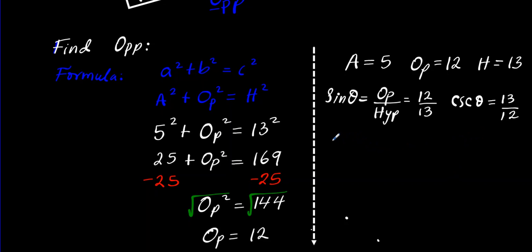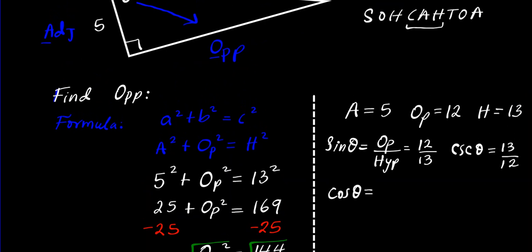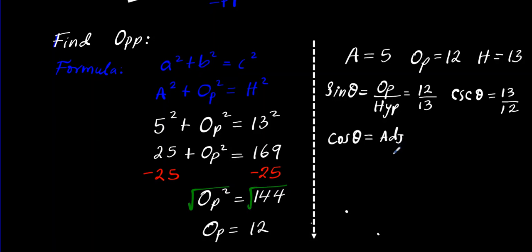Now cosine theta - we're going to use the CAH component of SOH-CAH-TOA. CAH means that cosine equals the adjacent divided by the hypotenuse. The adjacent is 5 and the hypotenuse is 13. The trig function that's related to cosine by reciprocation is the secant function. Secant is the reciprocal of cosine, so it's simply 13/5.